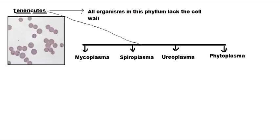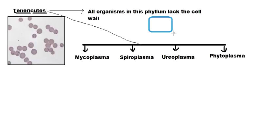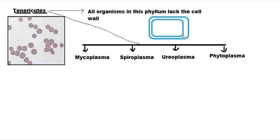The cell membrane may be many-layered. For example, in Mycoplasma we have three layers of cell membrane. So the cell membrane may be many-layered, but the cell wall is completely absent. Therefore, these organisms are resistant to penicillin.